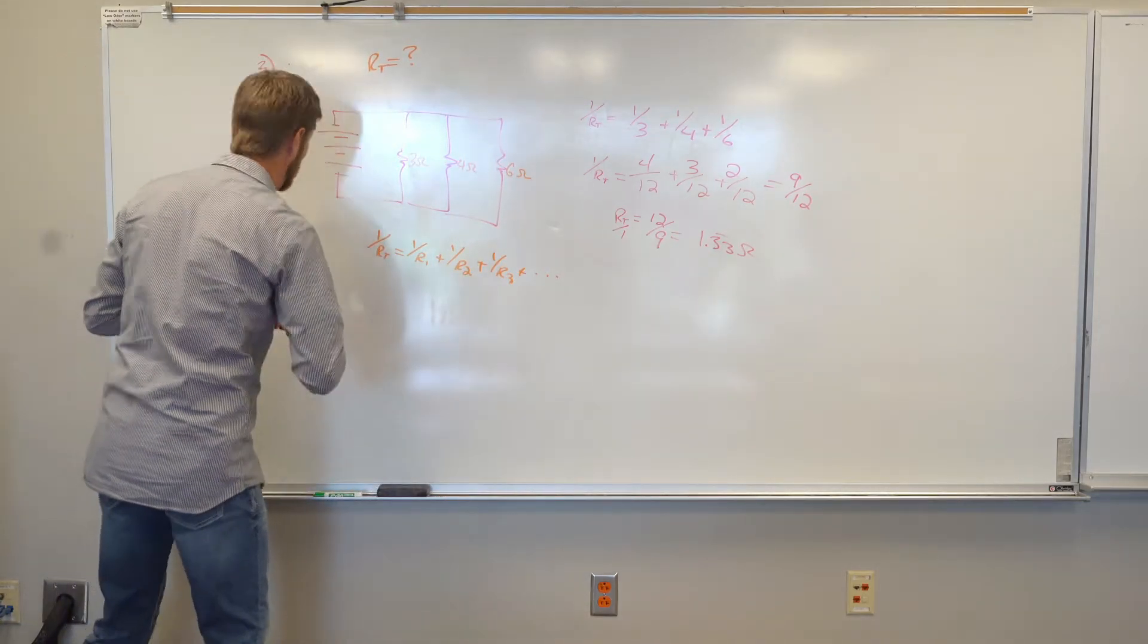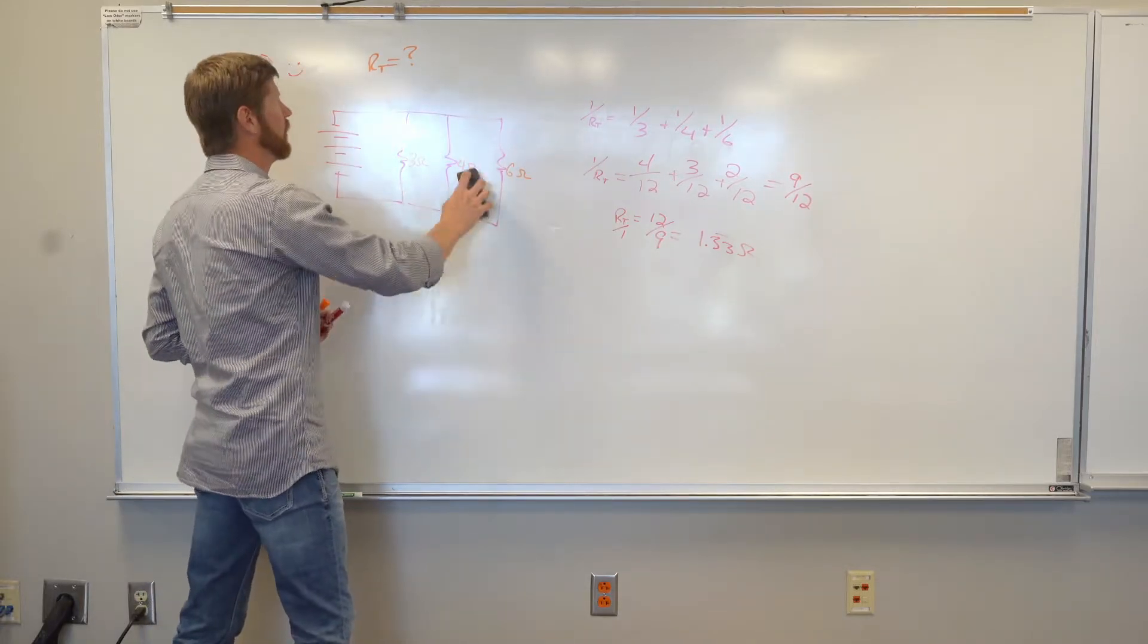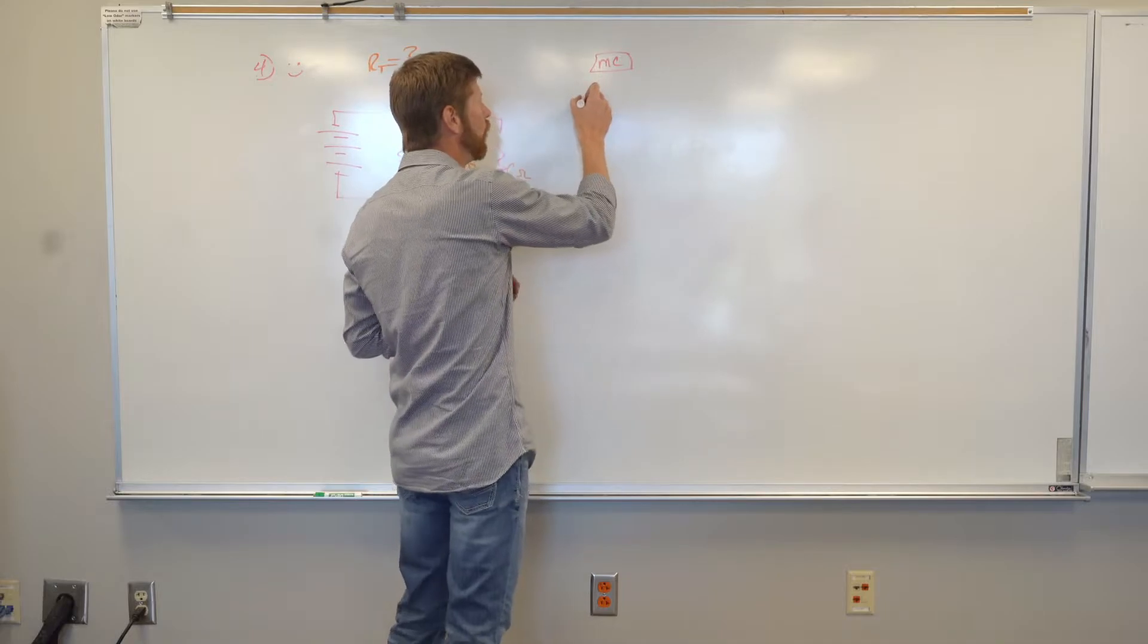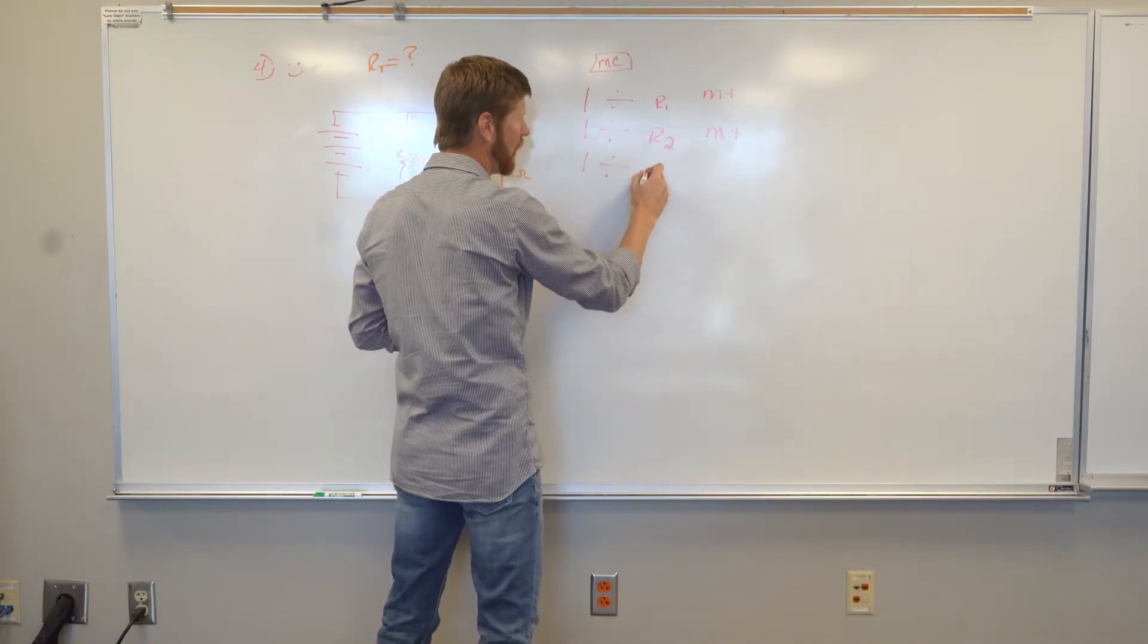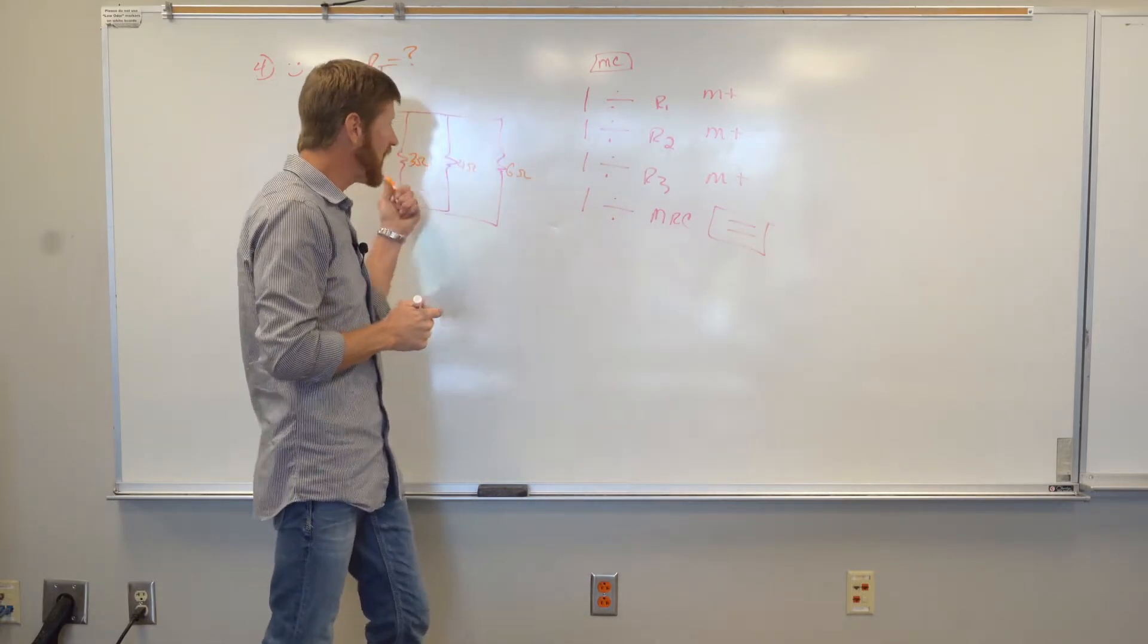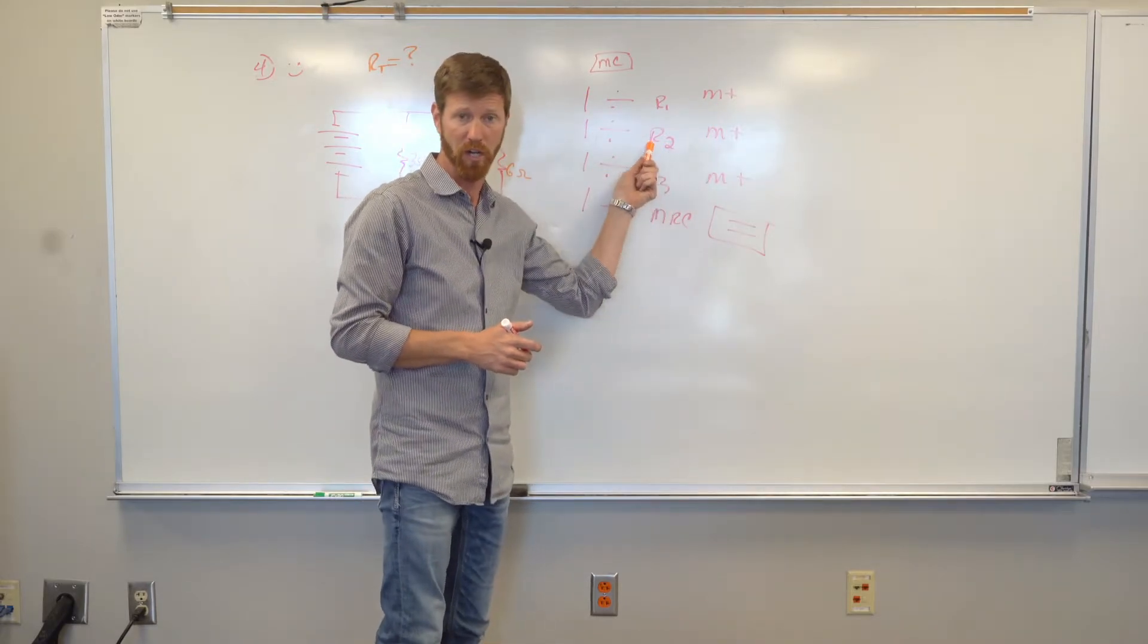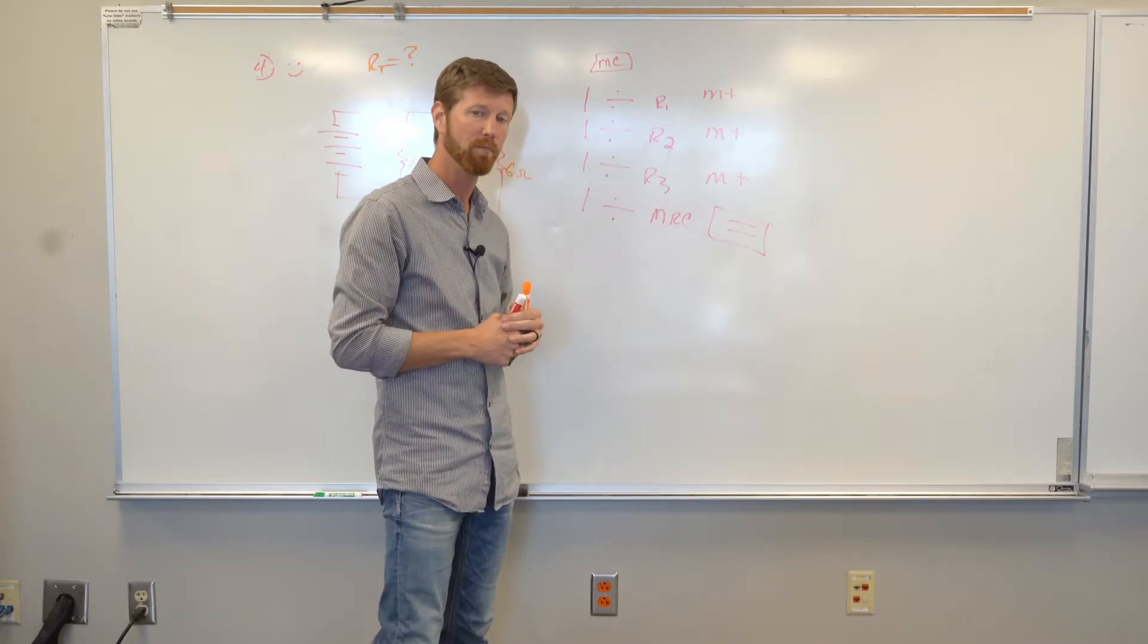Now we're getting into a little bit more of a happy face here. Method number four. Method number four is very similar to method number three in that it's the calculator method. So it's kind of the shortcut a little bit of method number three. So if you hit memory clear on your calculator and then you do one divided by R1 memory plus one divided by R2 memory plus one divided by R3 memory plus one divided by memory recall equals. If you plug these numbers on the calculator in this order, hitting these buttons, it will spit out 1.33 repeating. So definitely a method that's worth trying. However, kind of the drawback, there's a lot of buttons to push here. So again, you mess up one of those buttons, you're not going to get the correct answer at the end. So that's method number four, which kind of piggybacks off of method number three.